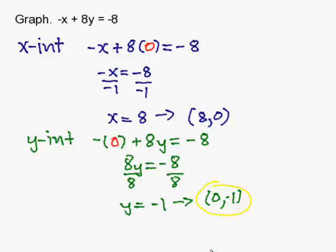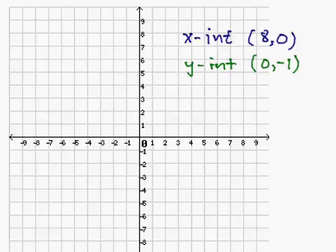Now that I have my y-intercept and my x-intercept, I can now graph my equation. I simply plot my x-intercept and my y-intercept. So I'm going to first start by plotting my x-intercept at eight comma zero.